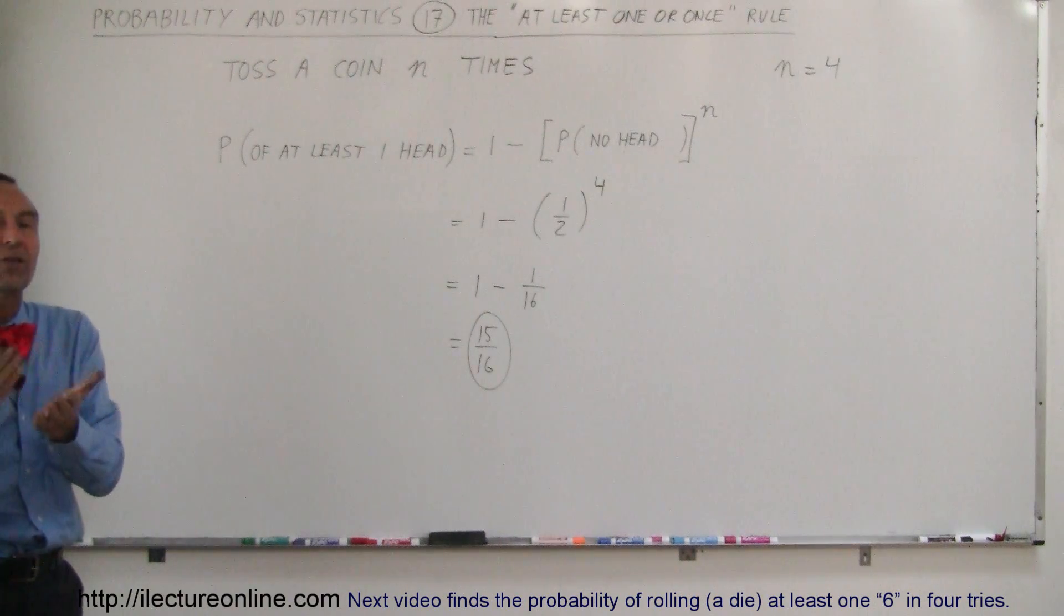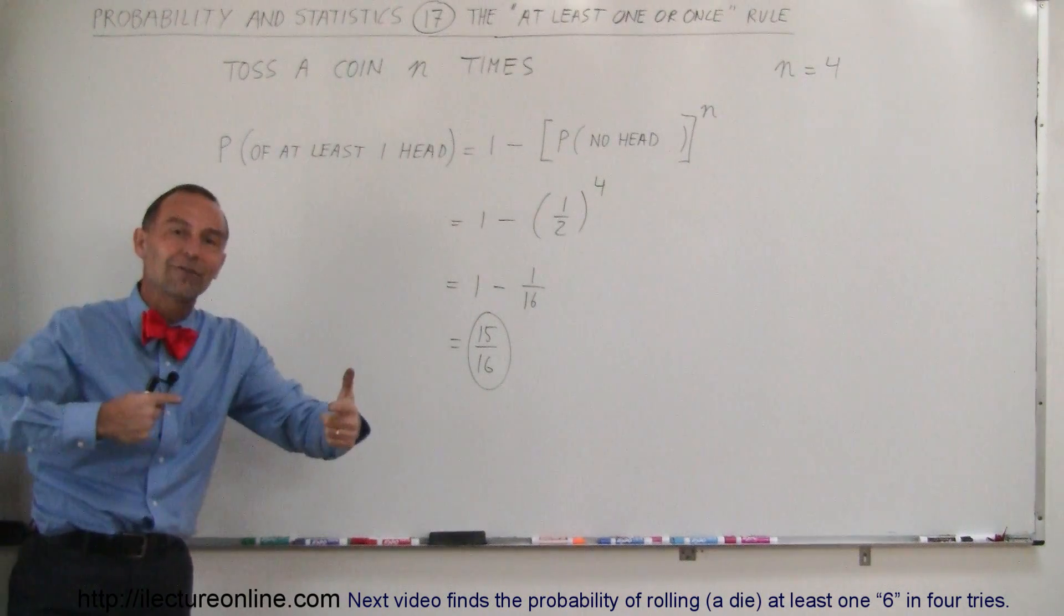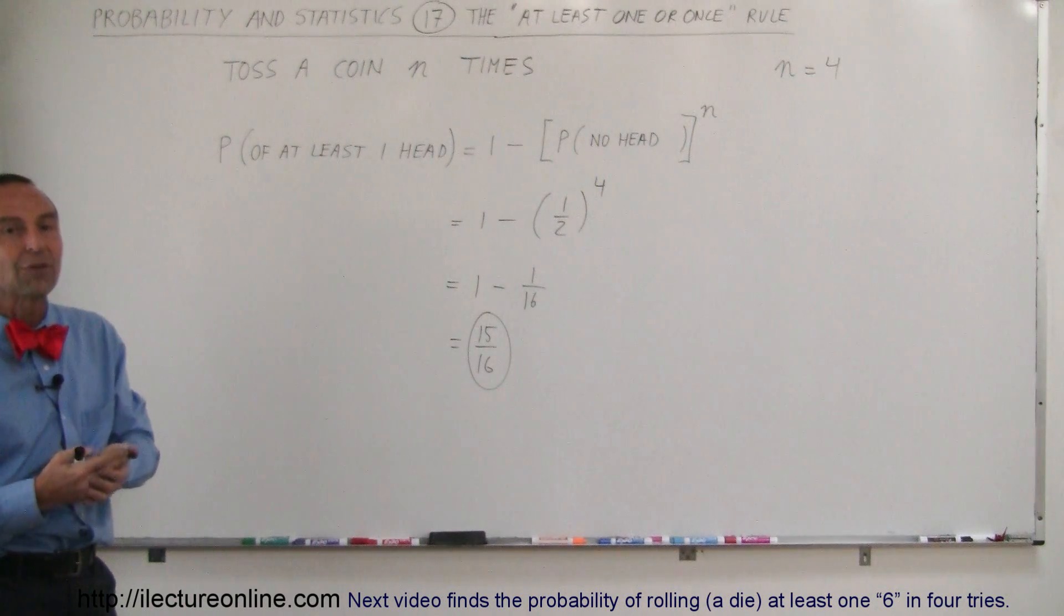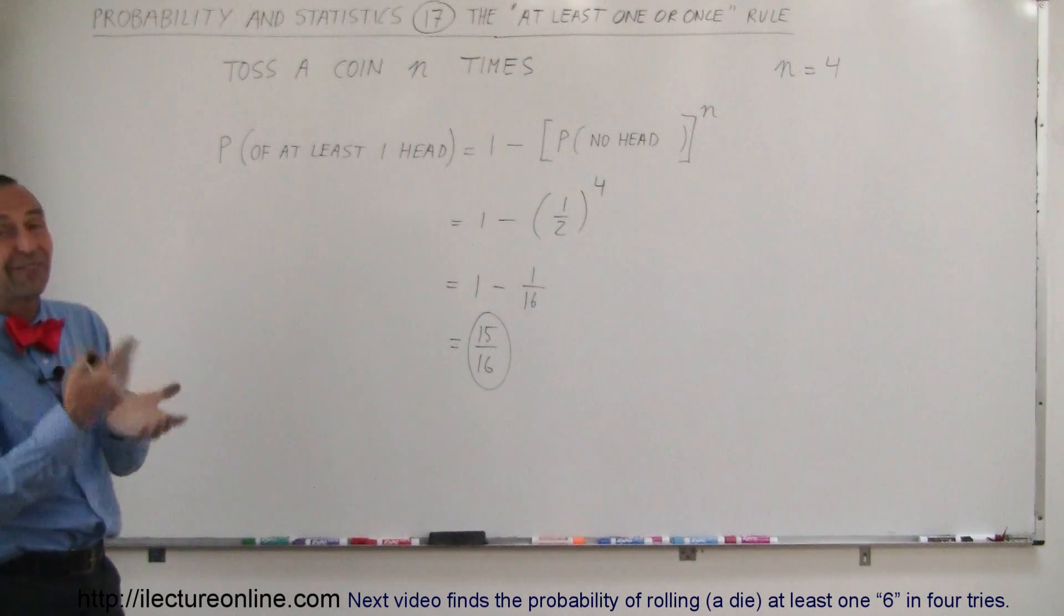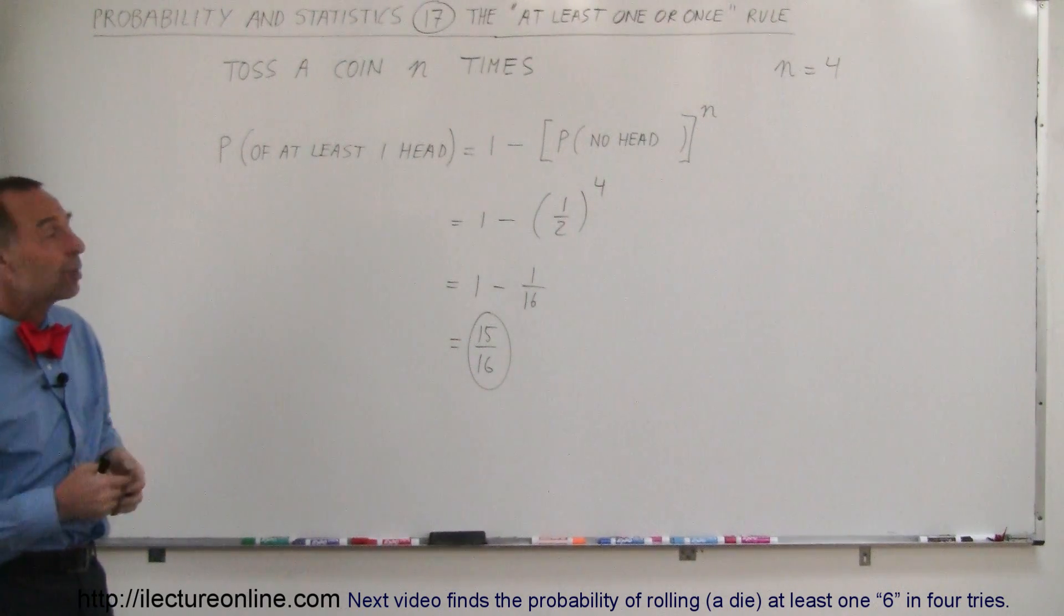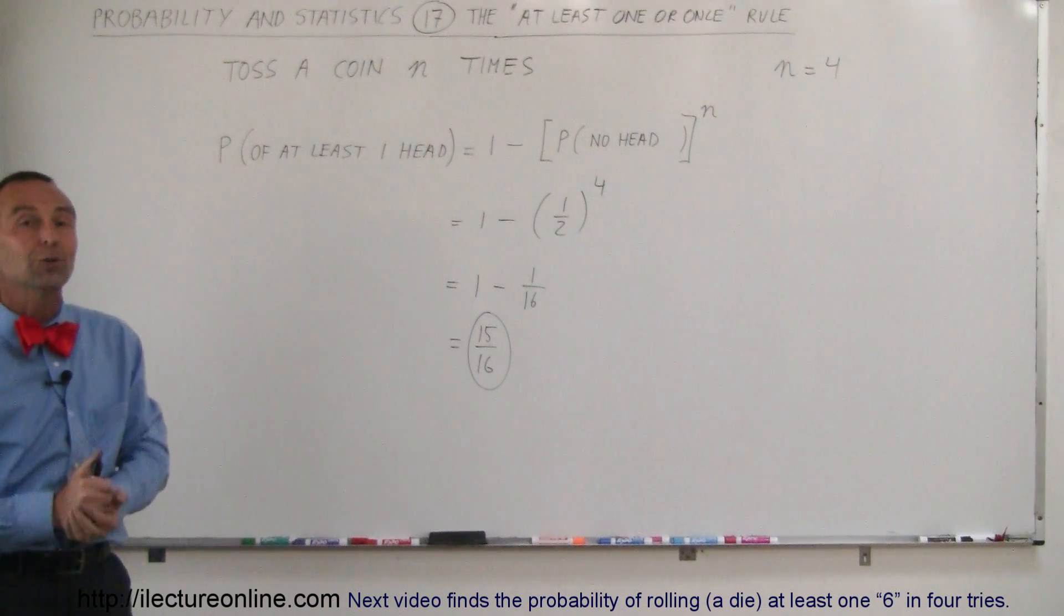It's simply one minus the probability that you get the opposite of the event, no head, and you raise that to the number of times you tried the event. So in this case, four tosses or four coin flips, so therefore n is equal to four, and that's how we do that.